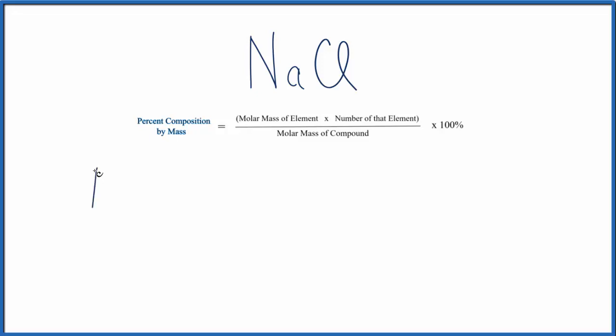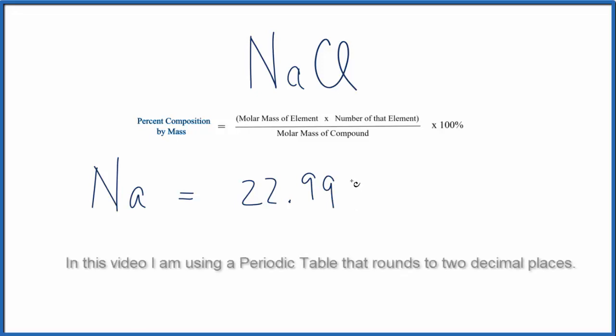We'll write Na, and that equals the molar mass of the element. Going to the periodic table, we see that sodium is 22.99 grams per mole. Since we only have one sodium atom, that's all we need to do for that.